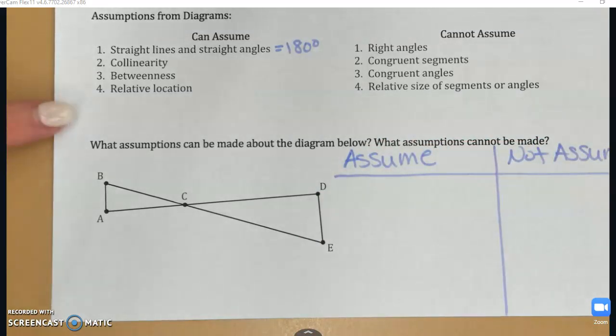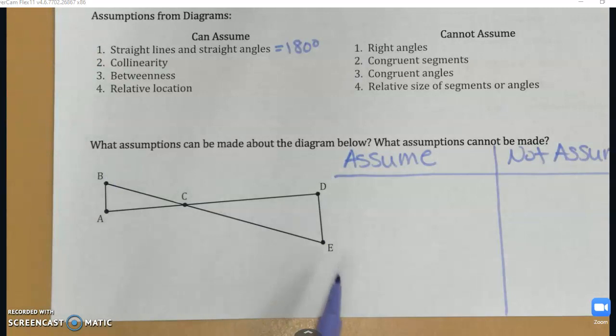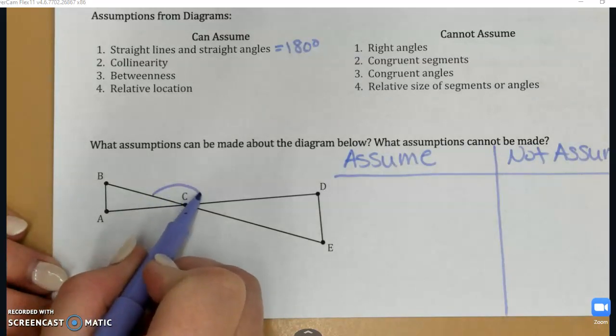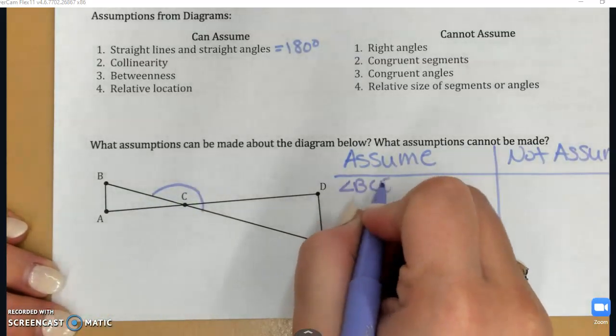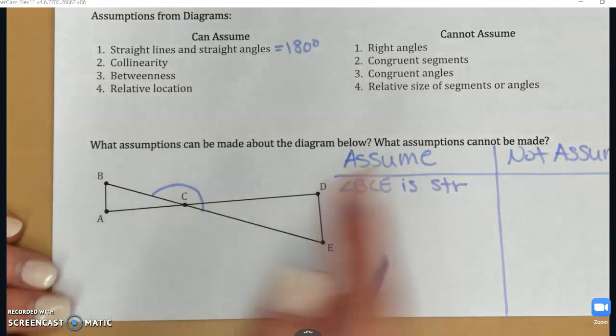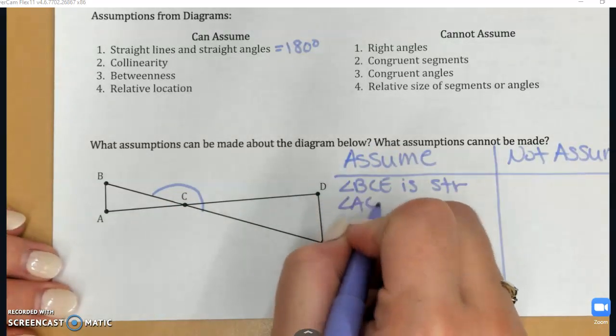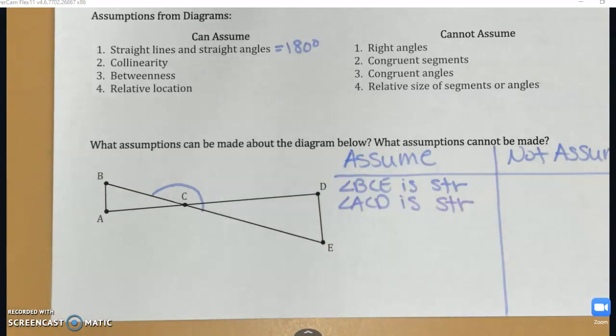So starting with safe assumptions. Straight lines and straight angles. Every line I see in this diagram I can assume is straight. Where do I have straight angles? Right here, angle BCE is a straight angle. I can assume that. And similarly, angle ACD is also a straight angle. I can assume that. So that means those are both equal to 180 degrees.